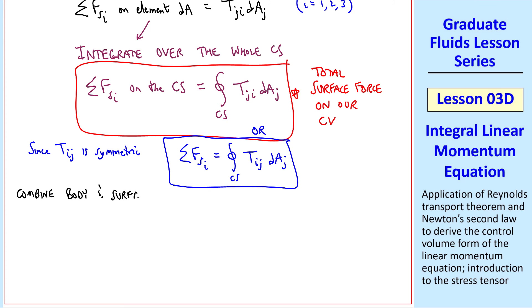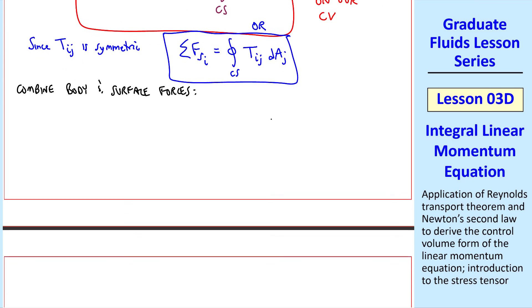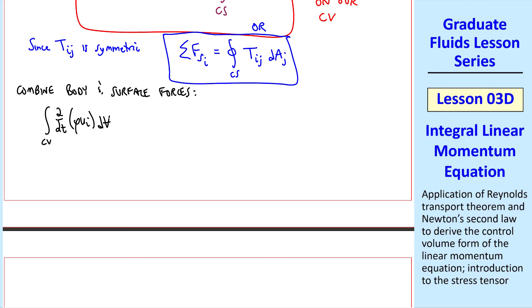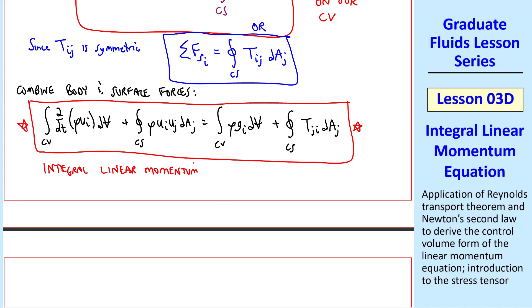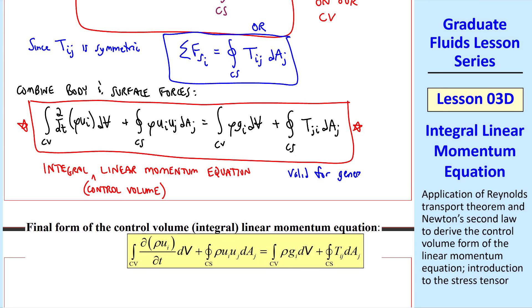Now we combine the body and surface forces to get our final form of the equation. Integral over the control volume of del del t of rho ui dV plus integral over the control surface of rho ui uj dAj equals integral over the control volume rho gi dV plus integral over the entire control surface tji dAj. This equation is the integral linear momentum equation, or the control volume linear momentum equation. Since we use the general Reynolds transport theorem to derive this, this is valid for the general case of a moving control volume. Of course, it also applies to a stationary control volume.